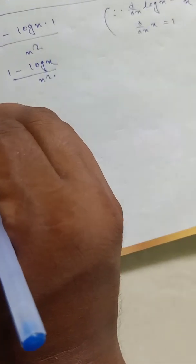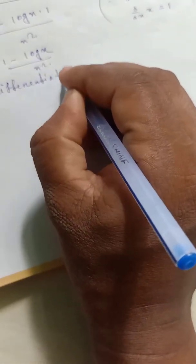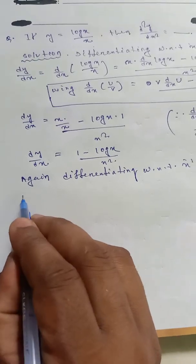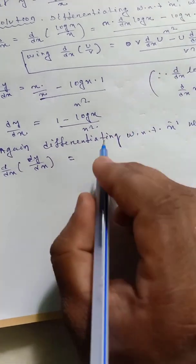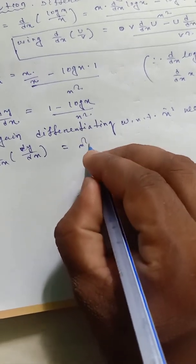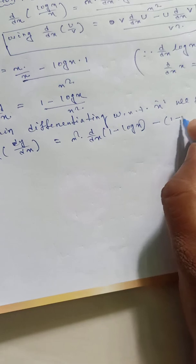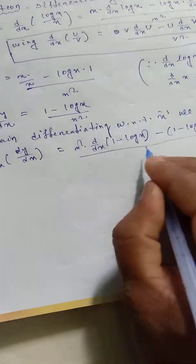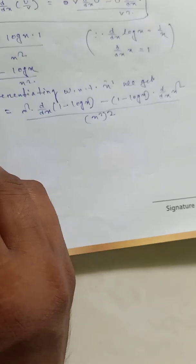Again, differentiating with respect to x, we get d square y by dx square. Using the same quotient rule formula: x square times d by dx of (1 minus log x) minus (1 minus log x) times d by dx of x square, all divided by x square whole squared.